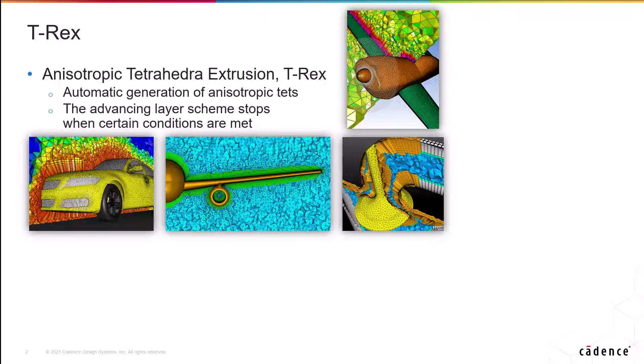Ultimately, the advancing layer scheme stops when either the cells have reached isotropy or if the cell quality criteria can no longer be maintained. In the end, the regions between the final fronts and the outer boundaries are filled with isotropic tets or a combination of voxels and tets.